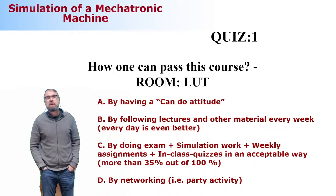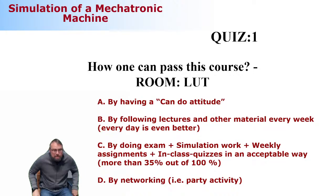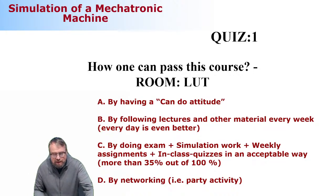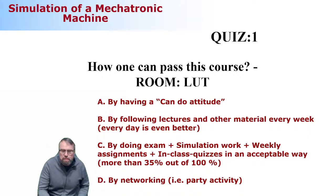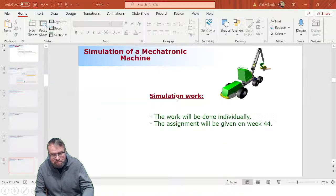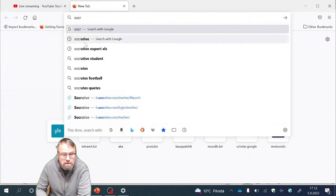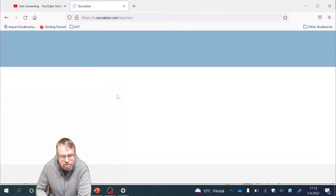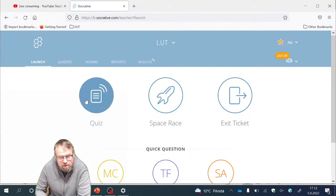Here's the first in-class quiz. So I'm going to put this live and you can answer. One out of the many options is correct. How can one pass this course? By having a can-do attitude - is this the only thing needed? By following the lectures and other material every week - is this enough? Or by doing exams, simulation work, weekly assignments, in-class quizzes in an acceptable way, more than 35% out of 110? By networking, party every day? Which one is correct?